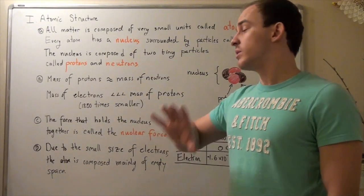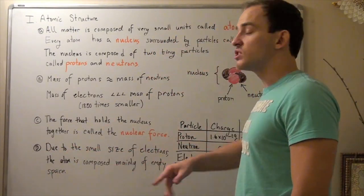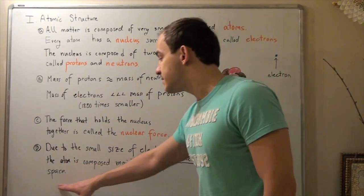Now, once again, it's very important to understand the fact that, due to the small size of our electrons orbiting our nucleus, the atom is composed mainly of empty space.